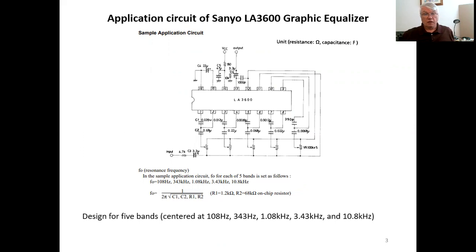It's designed for five bands centered at 108 hertz, 343 hertz, 1.08 kilohertz, etc. Now, each center frequency is a factor of 3.16 greater than the preceding one. 3.16 is the square root of 10. So after two bands, we have a decade in frequency from 108 hertz to 1.08. And then two bands later, we're at 10.8 kilohertz.